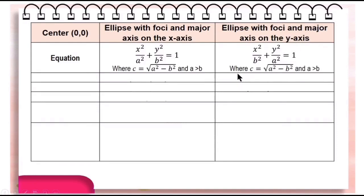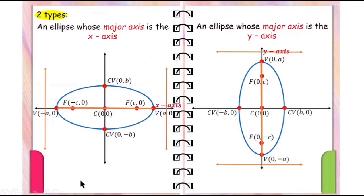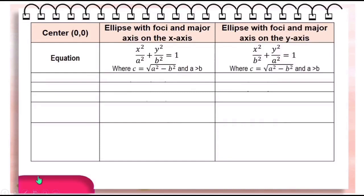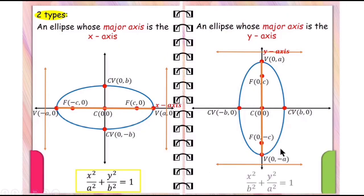We can tell just by looking at the equation if the major axis is on the x-axis or y-axis. Remember that a is greater than b. If the denominator of the x-squared term is greater than the denominator of the y-squared term, that means the major axis is on the x-axis, and this is the graph of the equation. But if the denominator is greater in the y-squared term, the major axis is on the y-axis, and this is the graph of that equation.